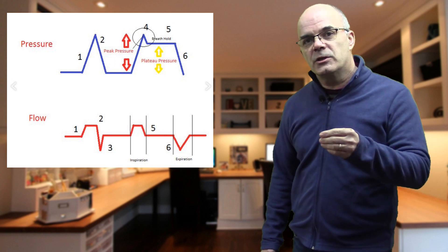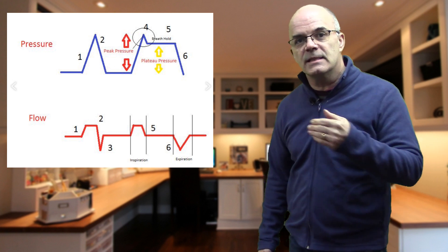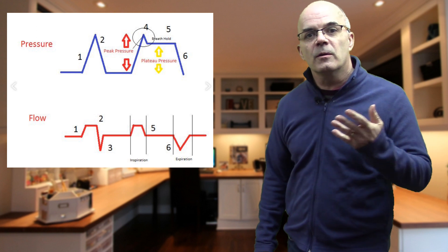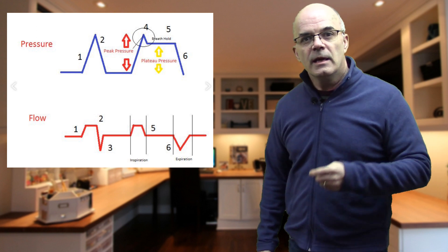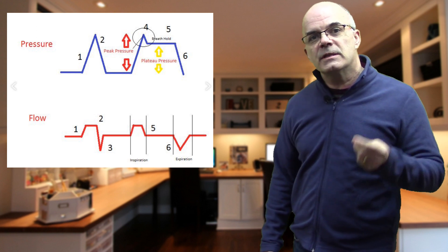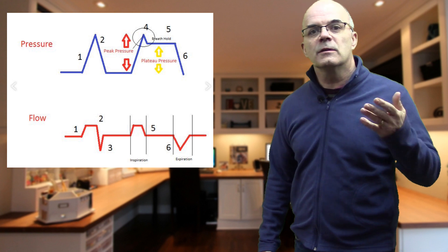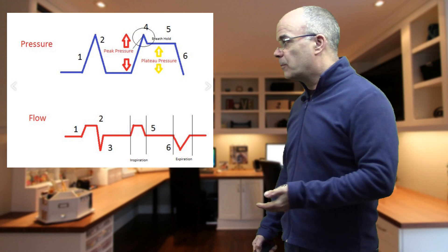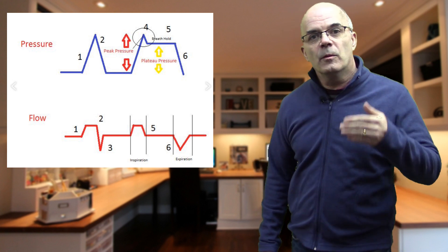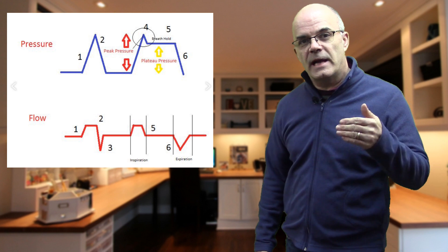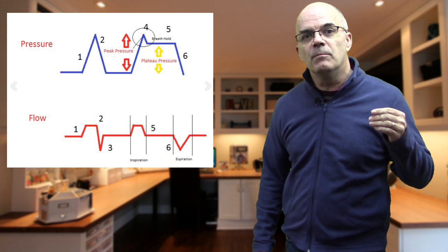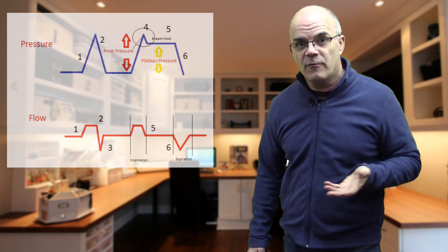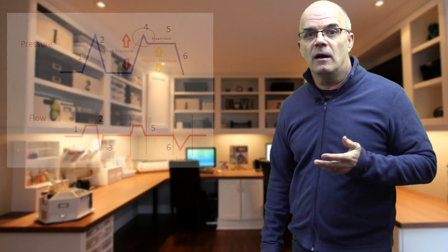Peak pressure is dependent upon the resistance in the airways and also on the compliance of the lungs. If the airway resistance is high or the lungs have become stiff, then the peak pressure will rise. The plateau pressure, however, is only related to the compliance of the lungs — in other words, how stiff those lungs are.